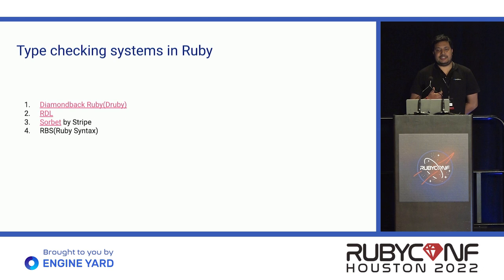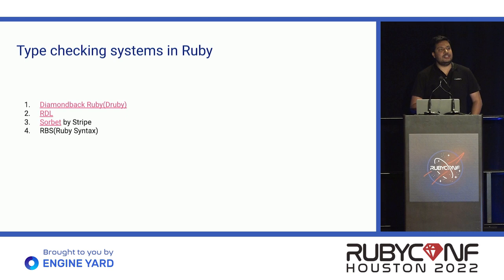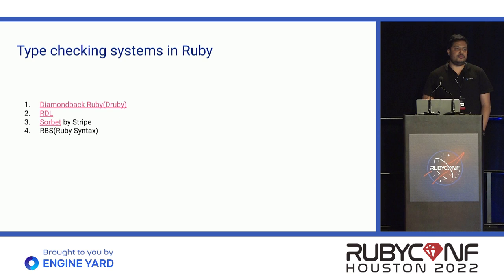What type checking systems are there in Ruby? This is not something new in the Ruby ecosystem. Back in 2009, there was something called Diamondback Ruby, or DRuby. Then Tufts University came up with RDL, then Stripe launched Sorbet, and then in 2019, the Ruby core team launched RBS.